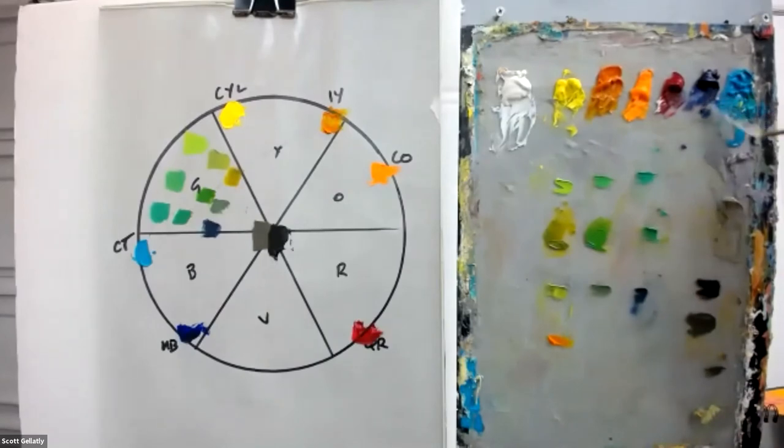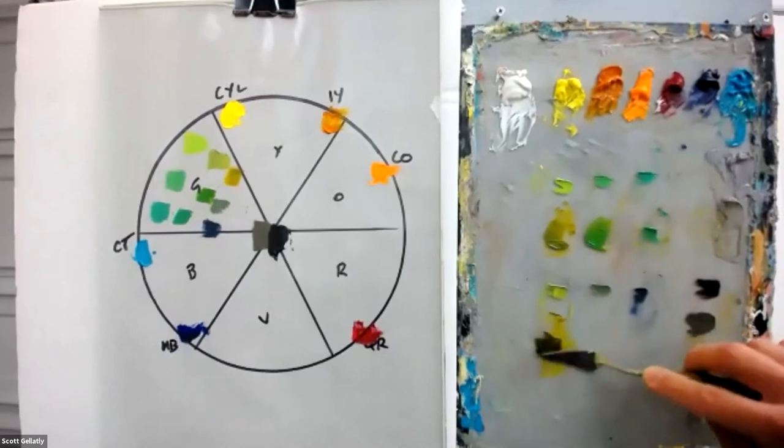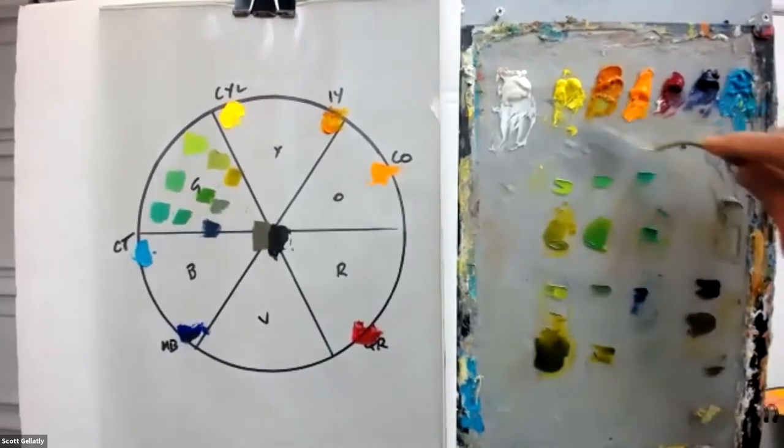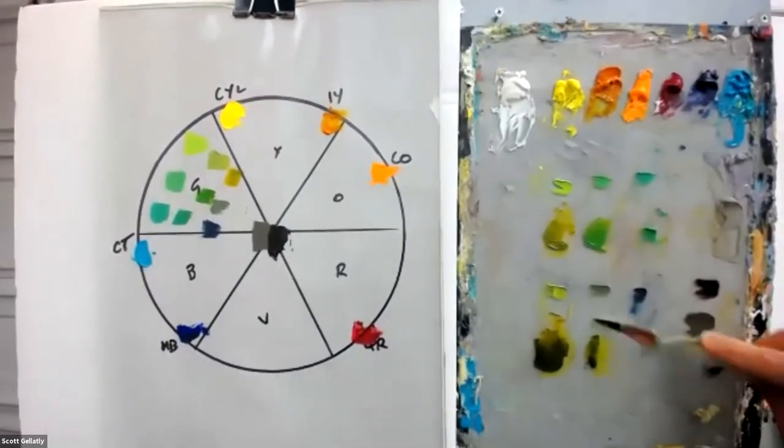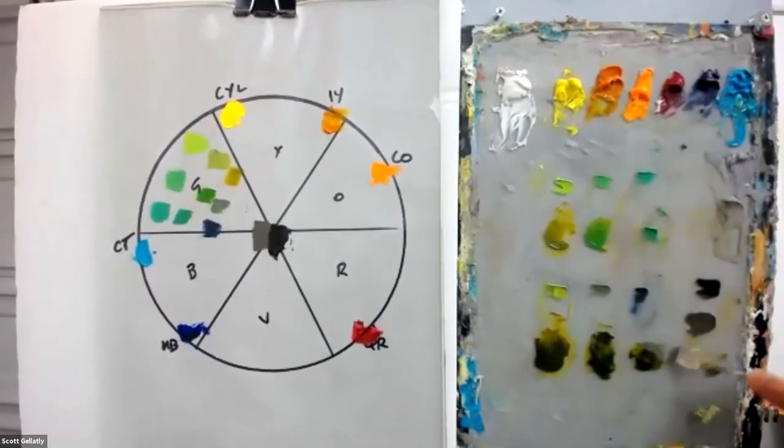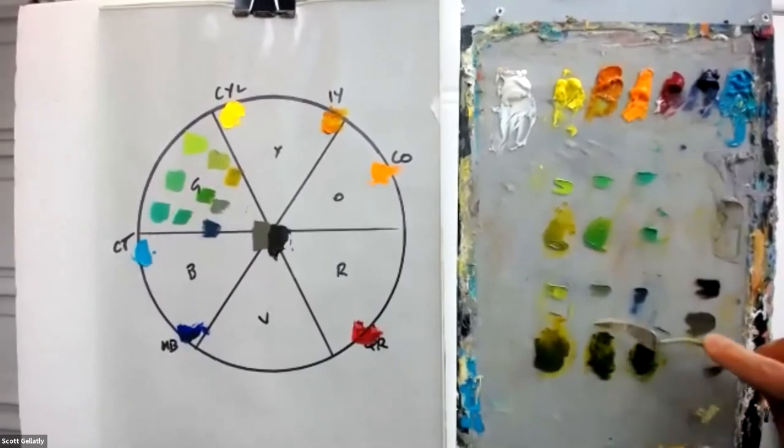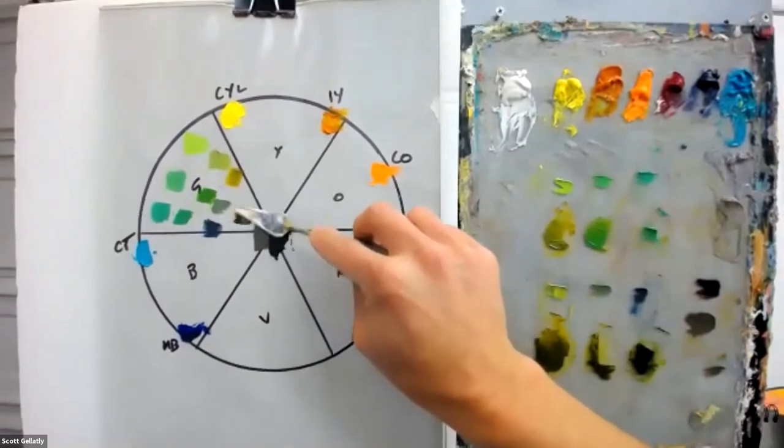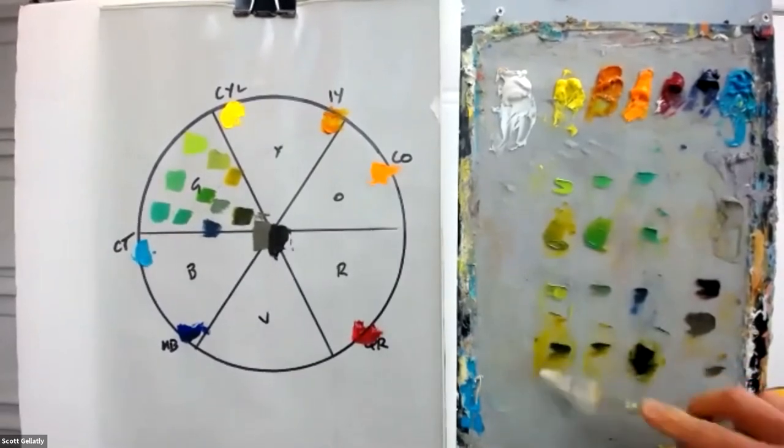So here we've got Indian yellow and the ultramarine blue. Not only are those colors more muted. I'll just include this middle mixture here, right in the center. But they're also deeper in value because of the inherent transparency of the Indian yellow and the ultramarine blue.